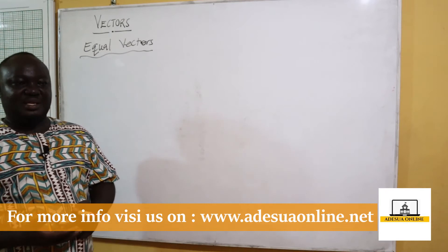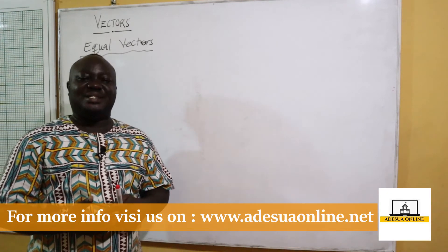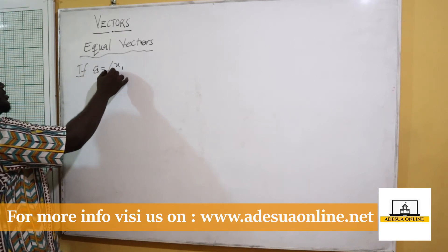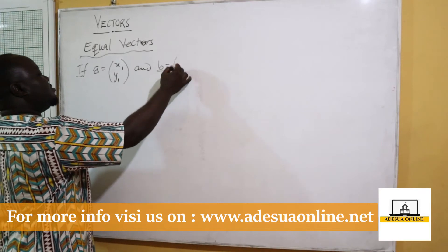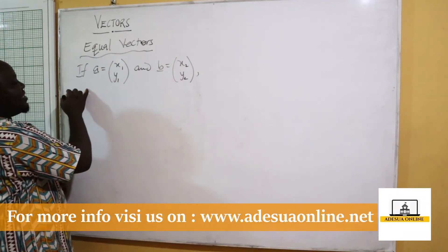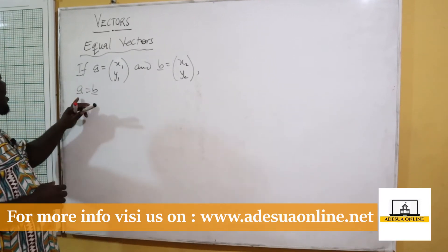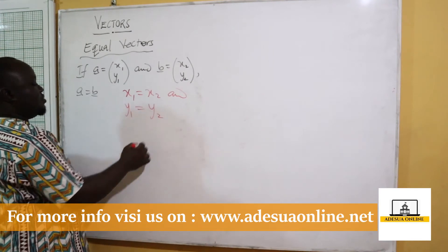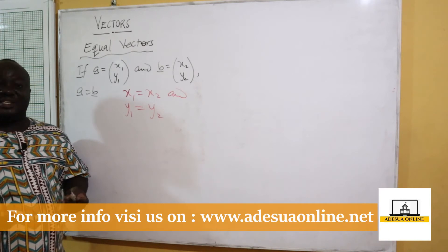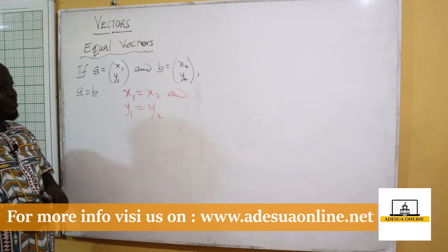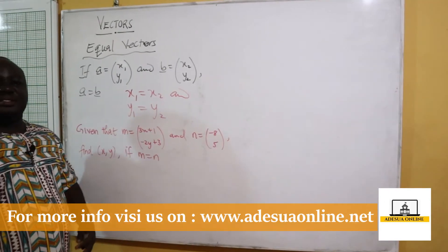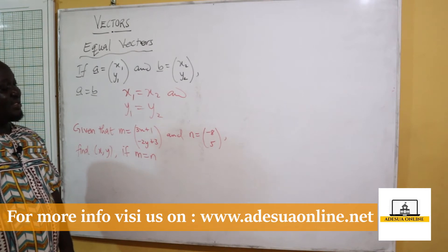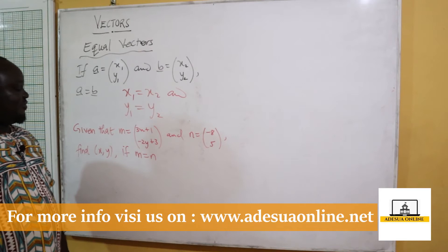Two vectors a and b are said to be equal when they have the same magnitude and the same direction. If a is (x1, y1) and b is (x2, y2), and a equals b, then it means x1 equals x2 and y1 equals y2. For example, given m equals (3x+1, -2y+3) and n equals (-8, 5), find x and y if m equals n.